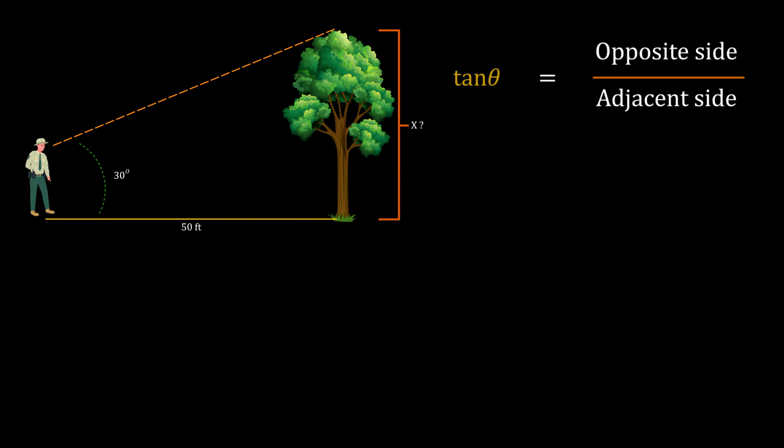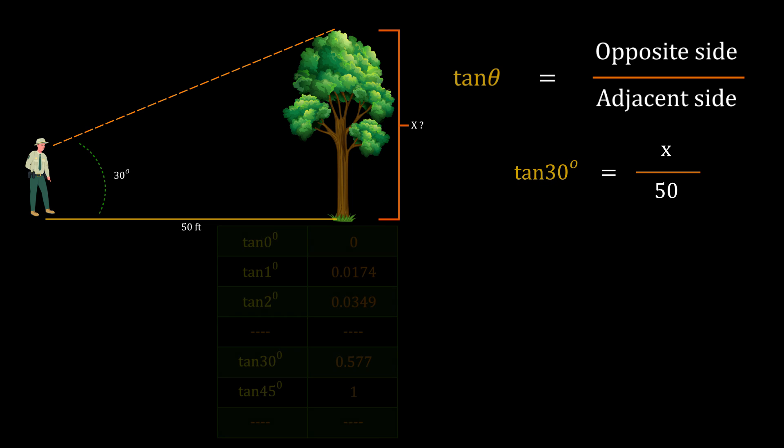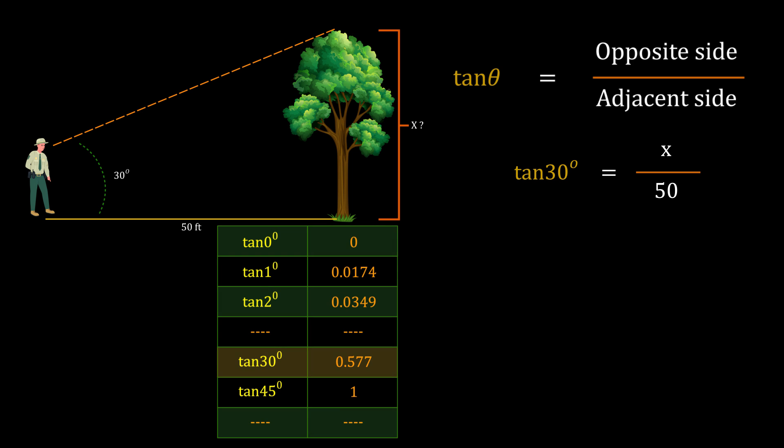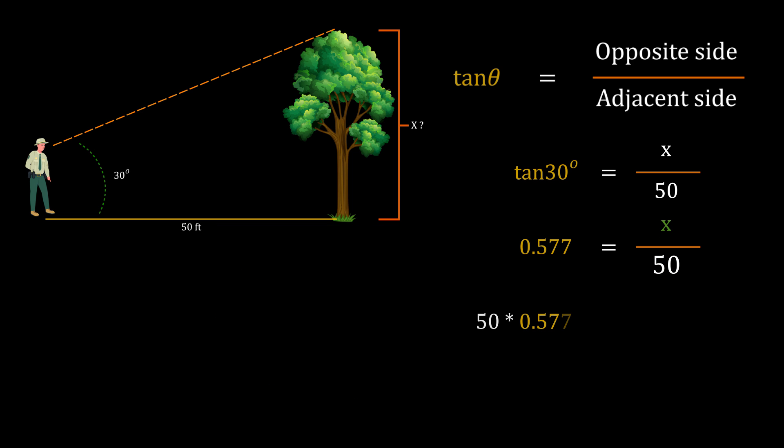Now let's use that to solve our problem. So we know that tan θ is opposite side by adjacent side. Here, opposite side is x, angle is 30, adjacent side is 50 feet. You can use your mapping table, and tan 30 is 0.577. Substitute that here, and you can figure that the height is 28.85.